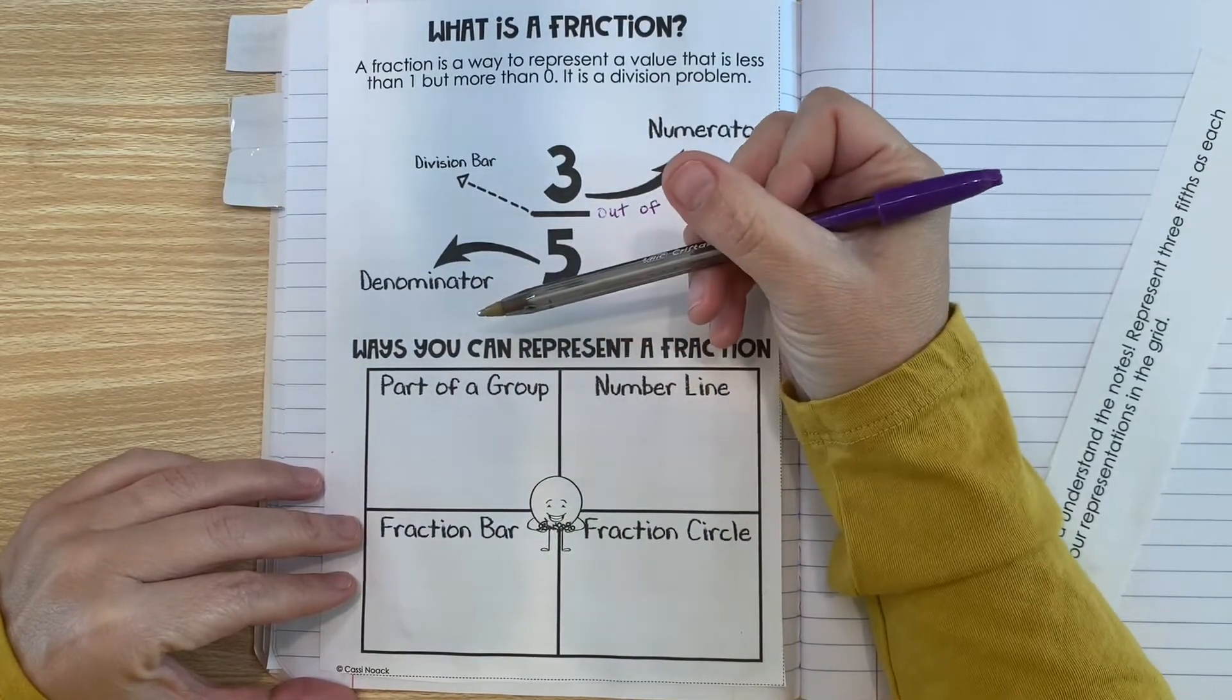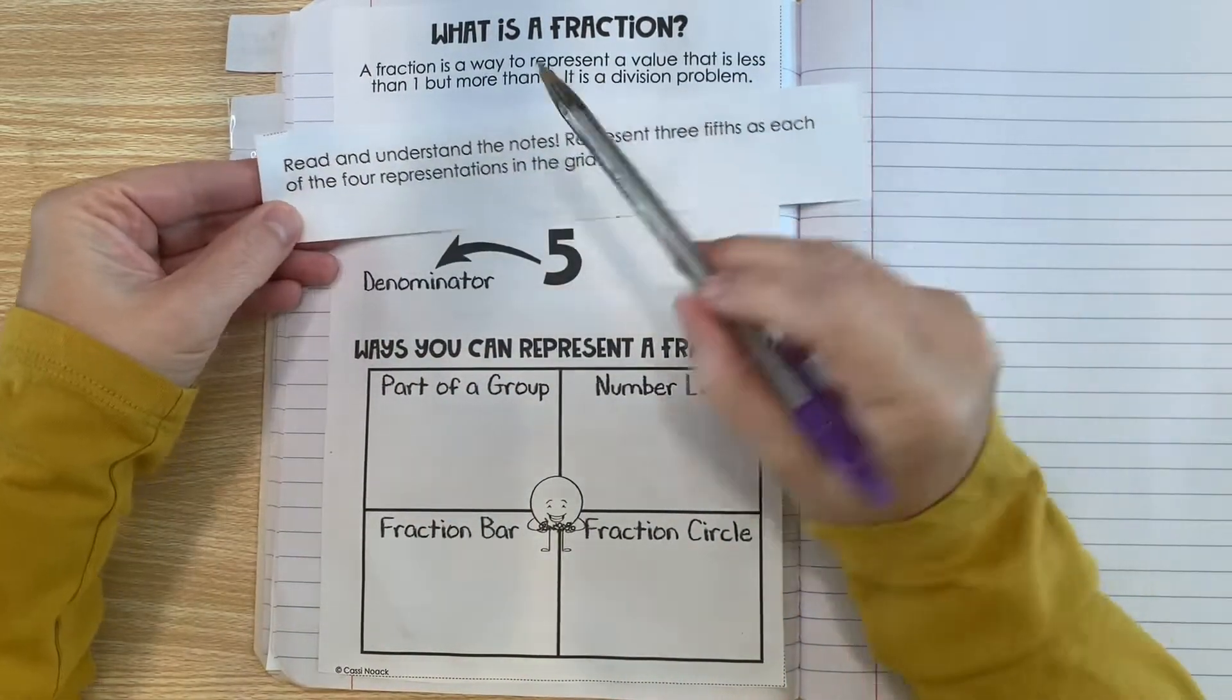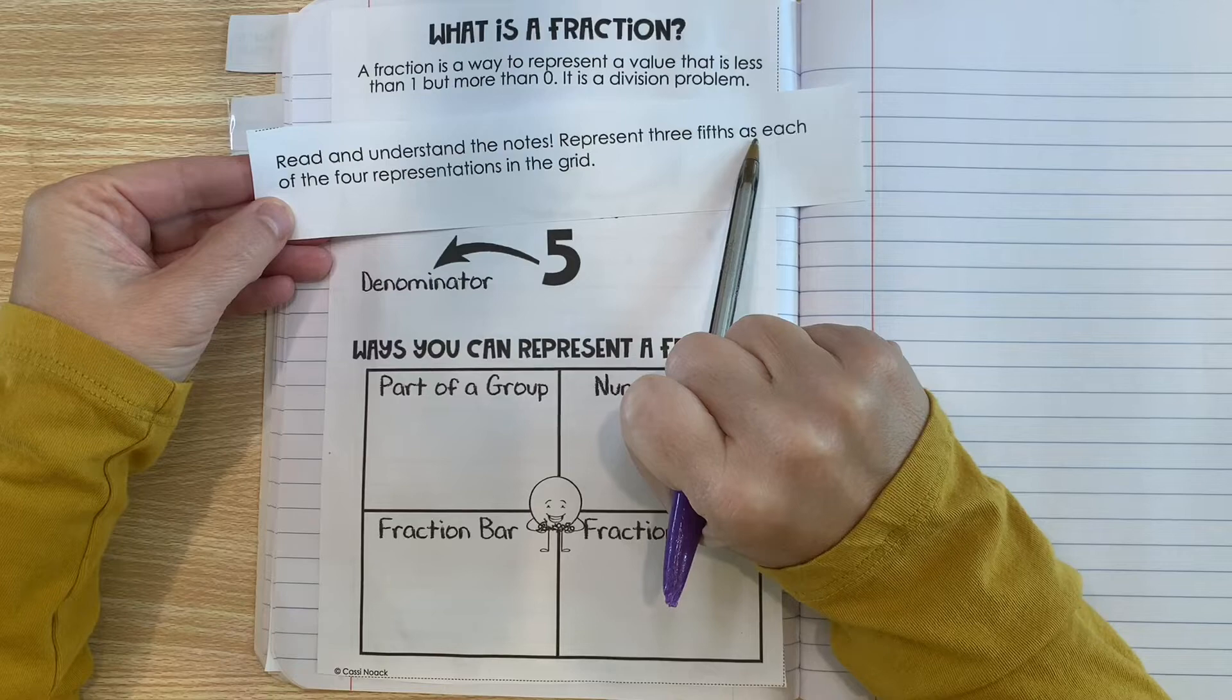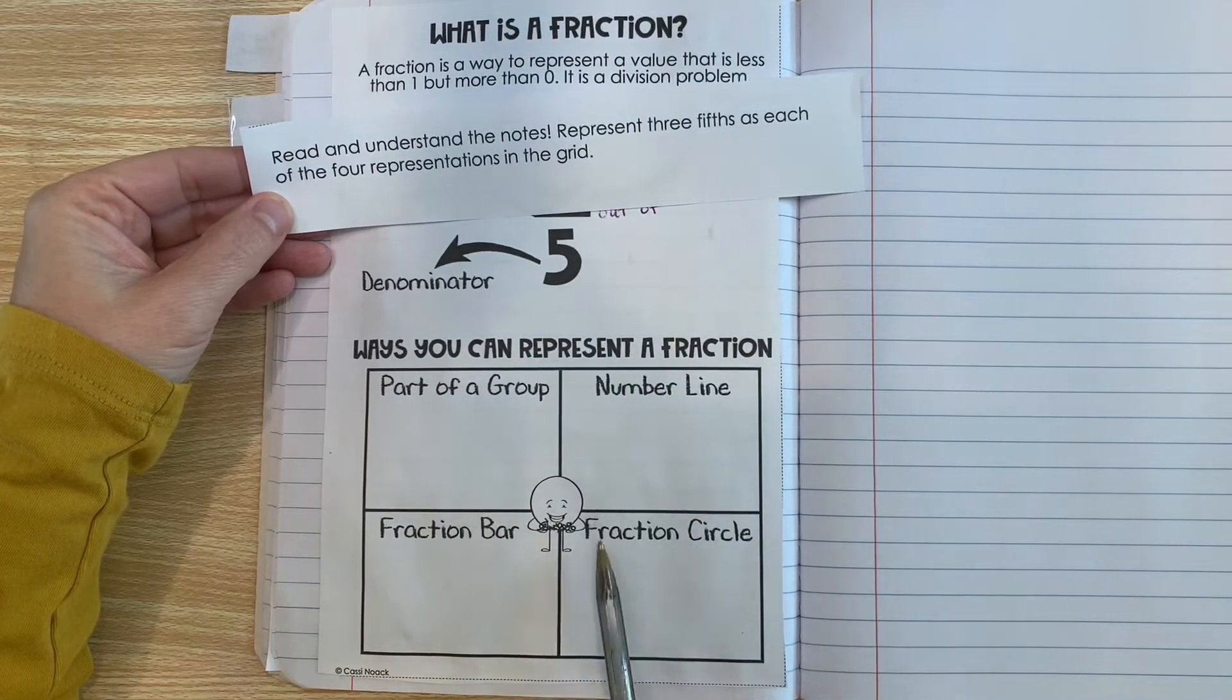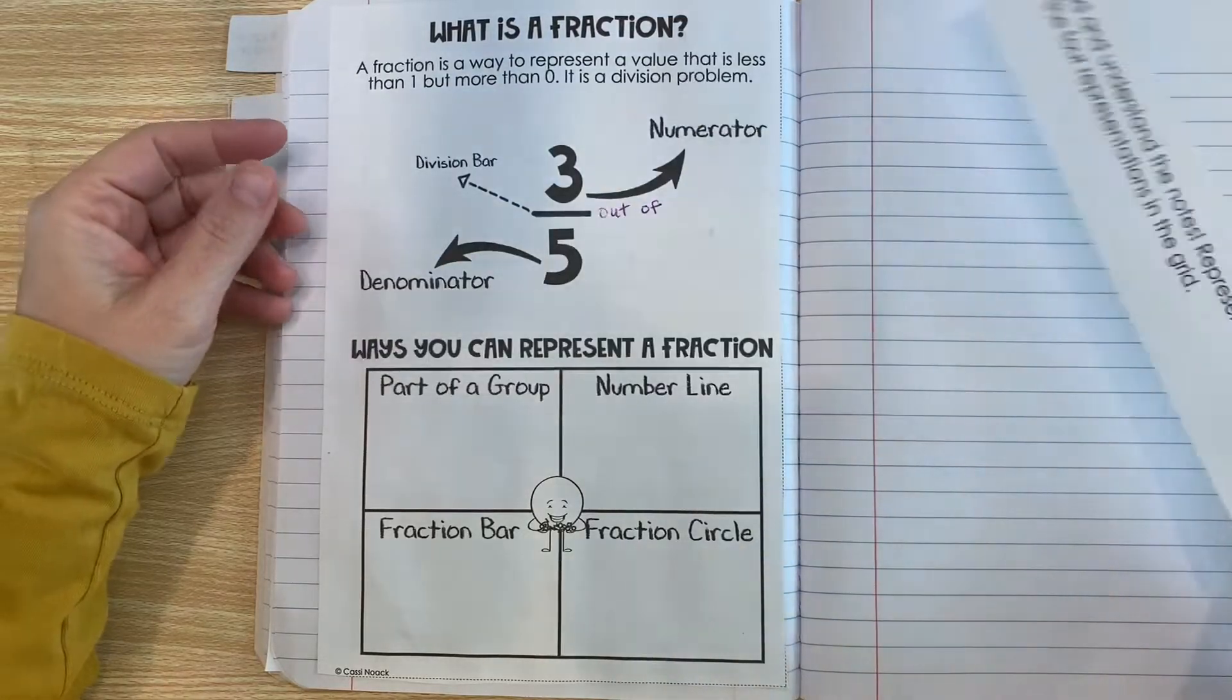So there's a lot of different ways that you can represent a fraction. Now the directions at the bottom said represent three fifths as each of the four representations here. So we're going to show three fifths in each of these things.